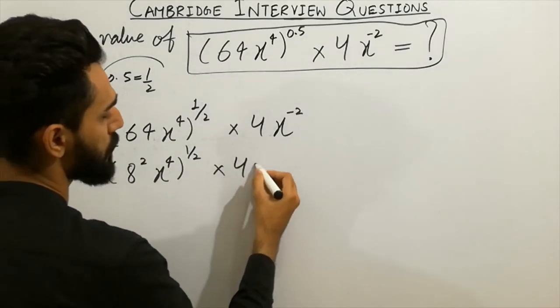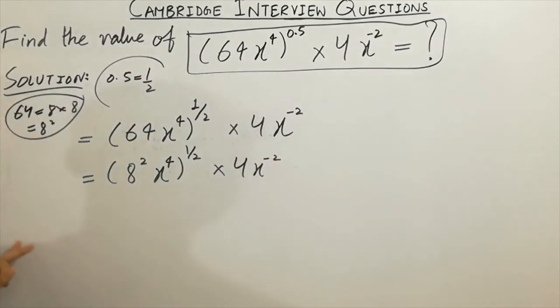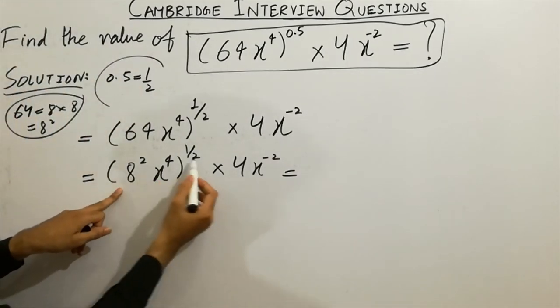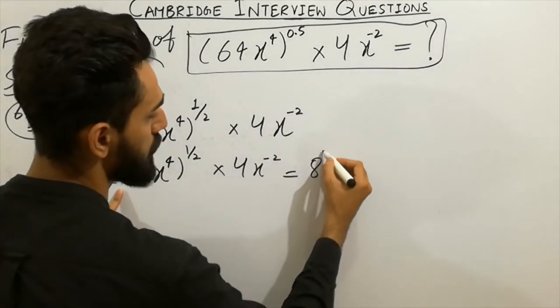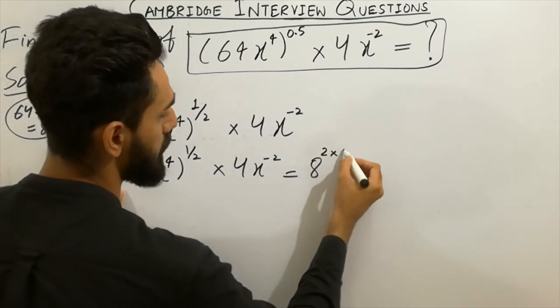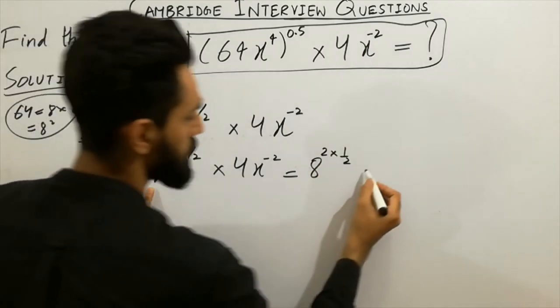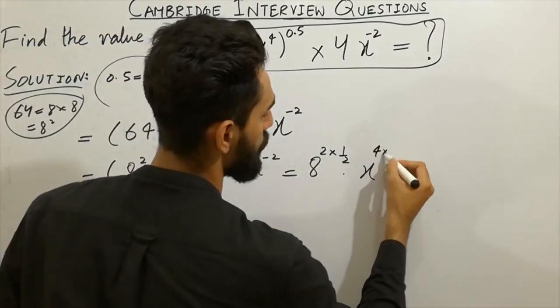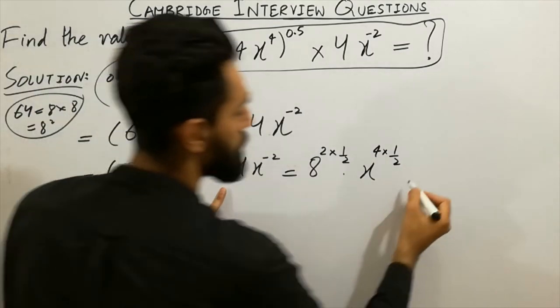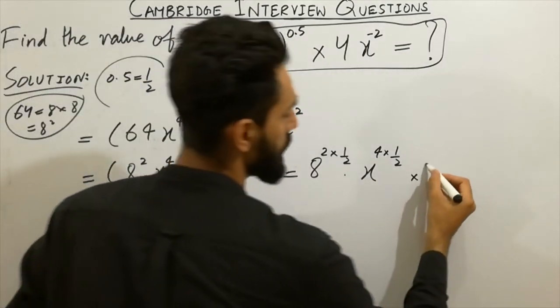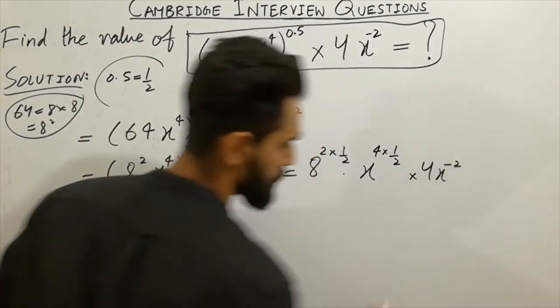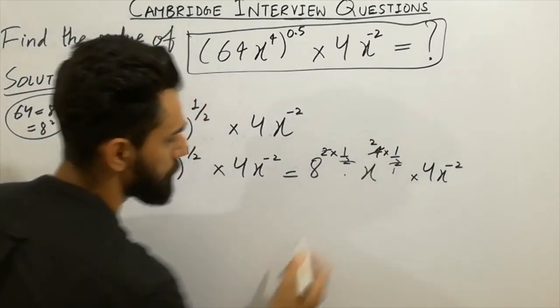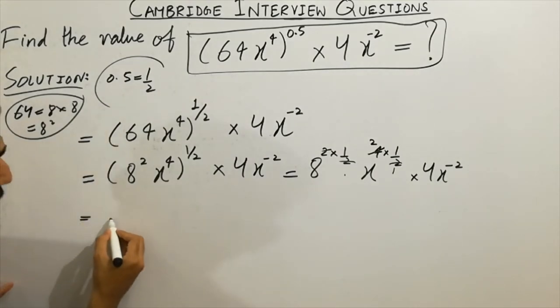Now I'm going to separate this: 8² multiplied by 1/2, and x^4 multiplied by 1/2. The 2 will cancel out. 2 times 1/2 equals 1, so 8^1. I will get the value here: 8x².